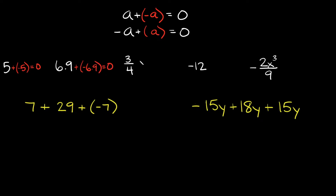Same thing with fractions. Here we have positive 3 over 4. So the opposite would be negative 3 over 4, right? So we would add negative 3 fourths, and again your answer would be 0.